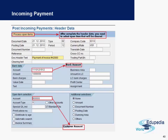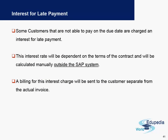Once you enter the customer account number and click on the 'Process Open Items' button on the top left, you will be provided with a list of all open items for that particular customer. You then need to choose which items the customer is making a payment against — for example, you may have five different invoices but the customer may be paying only for three because the other two are not yet due.